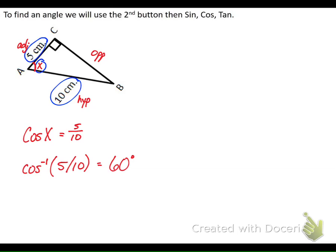Everyone's calculator should give 60 degrees. You've got a 90-degree angle and a 60-degree angle, and knowing they have to add up to 180, the third angle would have to be 30 degrees. Hitting 2nd cosine gives you cosine to the negative first - that inverse cosine - and that helps you find the angle.